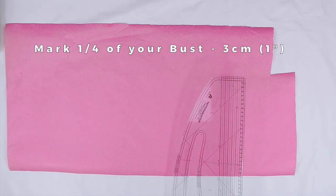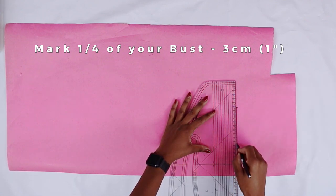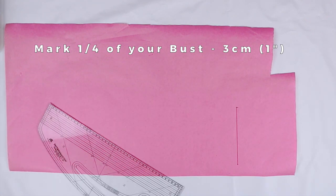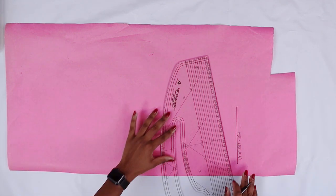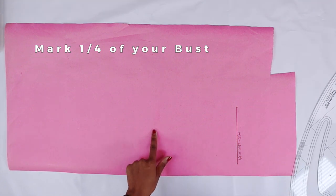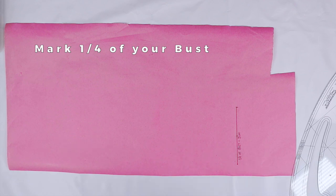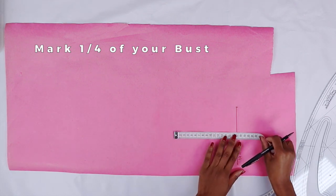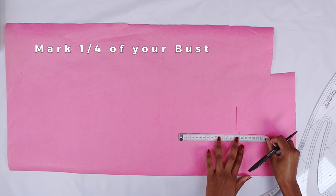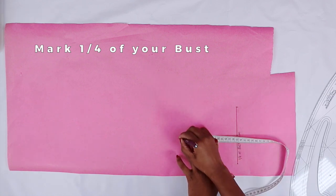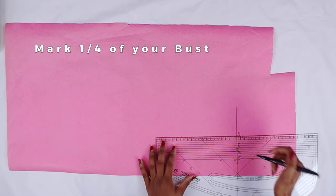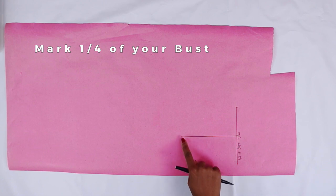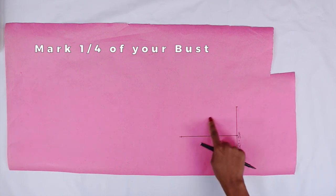Next, draw a horizontal line. Now divide this line by two. From this point, measure a vertical line up one quarter of your bust measurement again, minus 14.5. Now draw a vertical line.